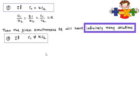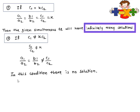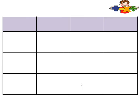And if c1/c2 is not equal to K, then the condition becomes a1/a2 = b1/b2 ≠ c1/c2, and in this condition there is no solution. So we have three cases: (1) a1/a2 ≠ b1/b2 → unique/one solution; (2) a1/a2 = b1/b2 = c1/c2 → infinitely many solutions; (3) a1/a2 = b1/b2 ≠ c1/c2 → no solution.